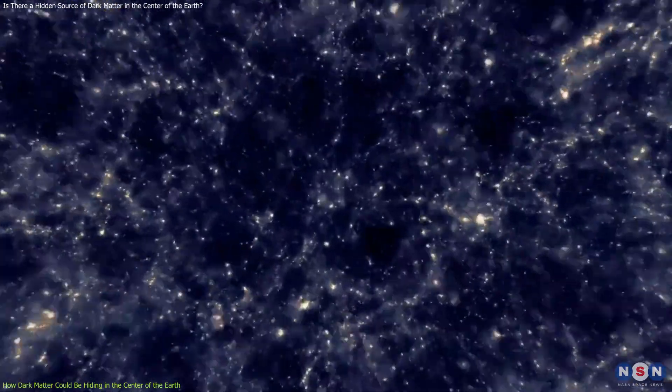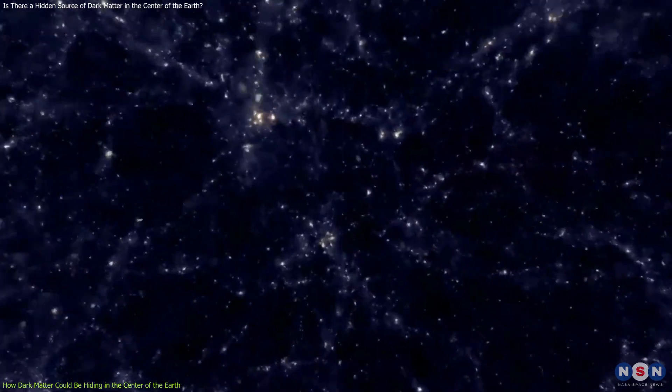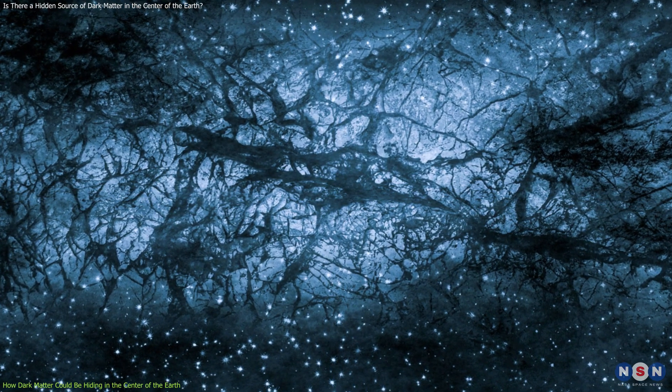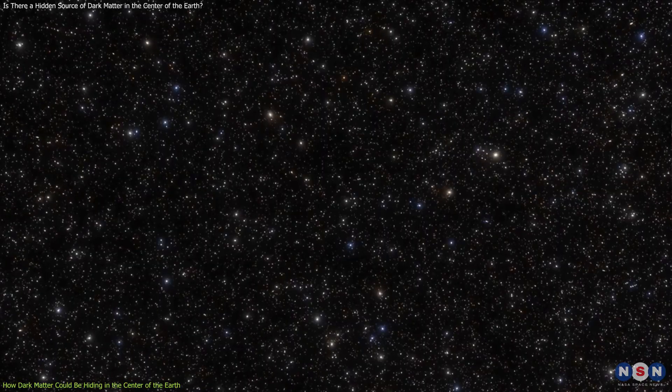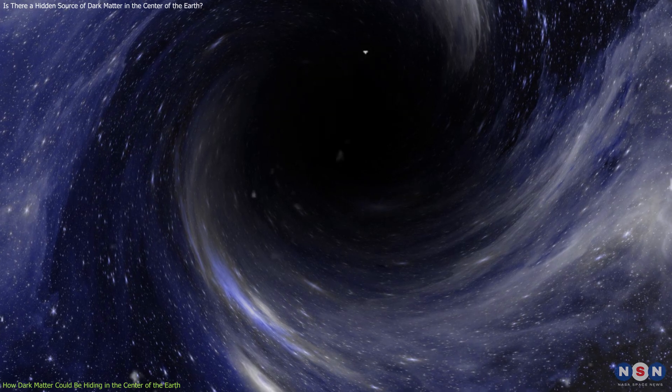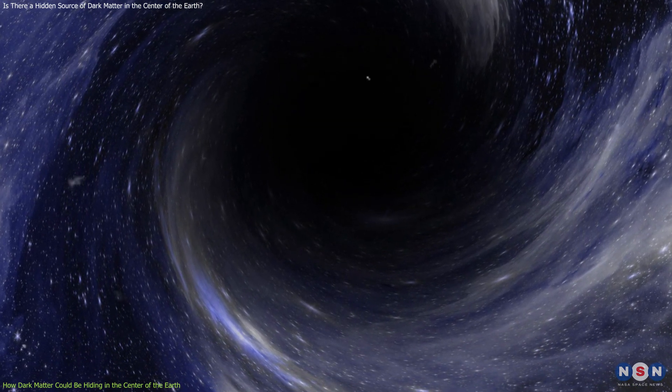What is dark matter made of? How does it interact with ordinary matter? And why is it so hard to detect? Dark matter is a type of matter that does not emit or reflect any light, and therefore is invisible to our eyes and telescopes. However, we know that it exists because it has a gravitational effect on the visible matter around it.